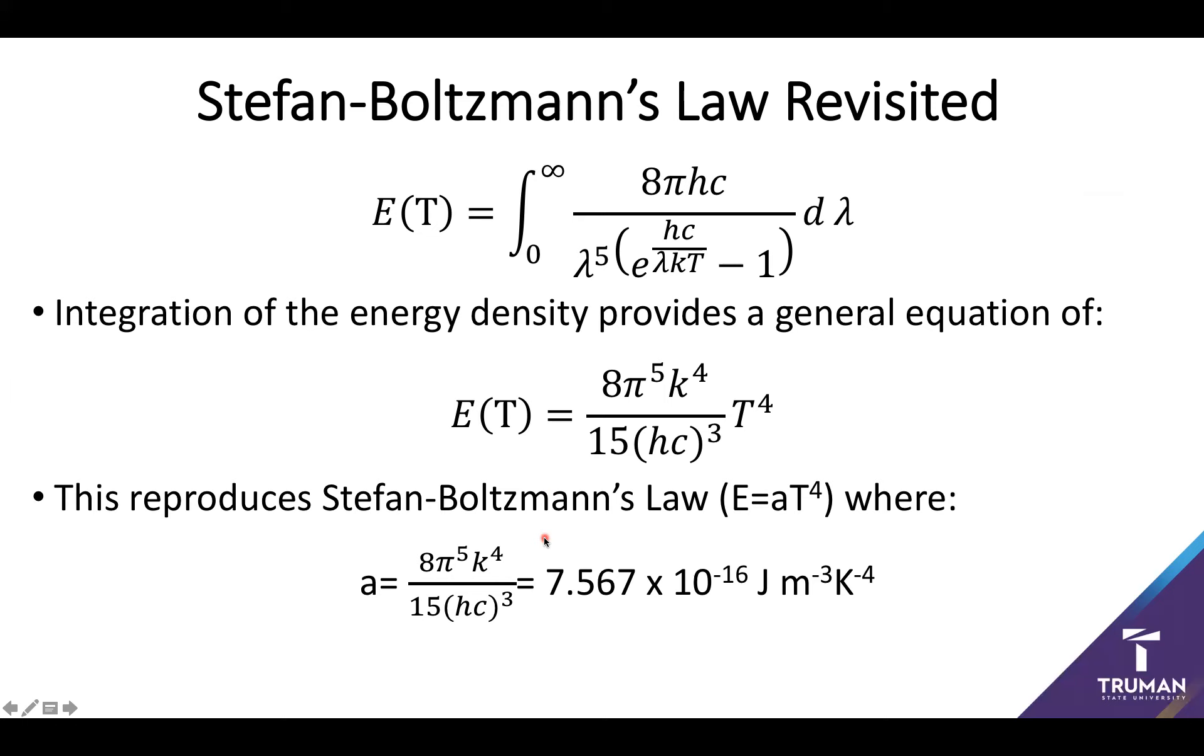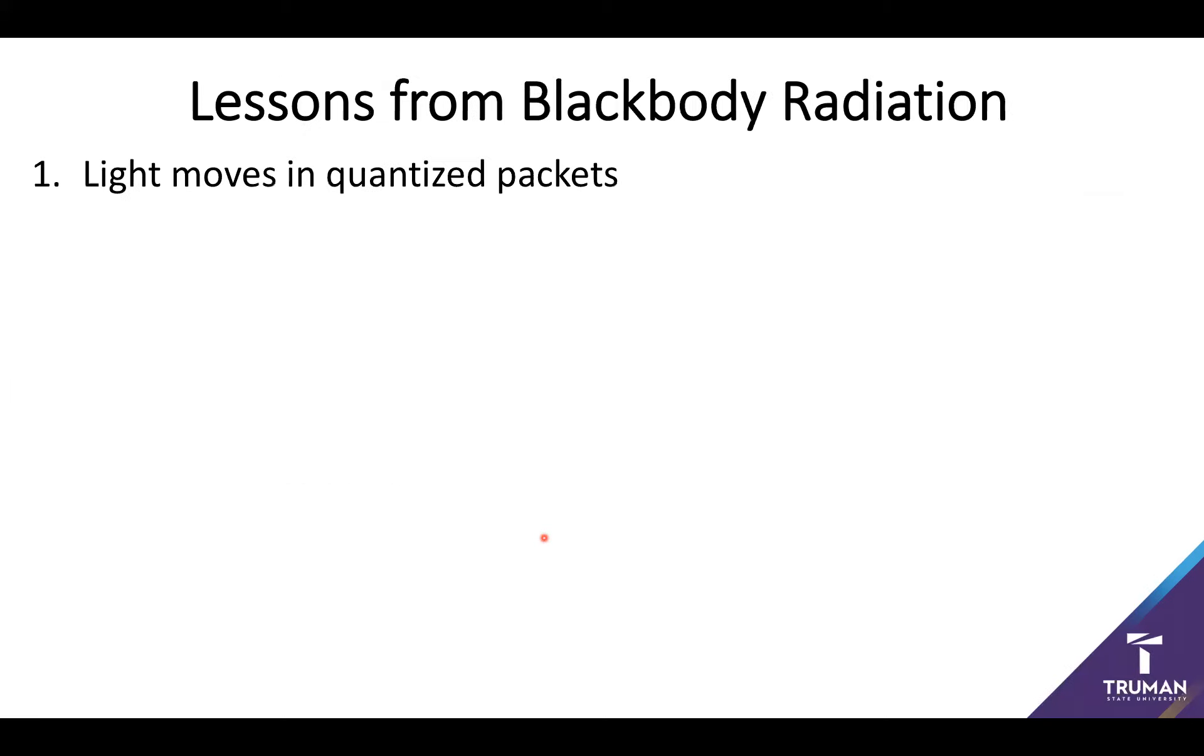What I want to focus on before we end is the sets of key lessons that we get from blackbody radiation. First, and this one is really important, is that light moves in quantized packets. We'll later develop this into the idea of photons. Second, and this one can't be overstated, chemical systems have quantized energy levels. This ends up eventually leading to the idea of atomic and molecular orbitals, which is going to be a major feature of this course.